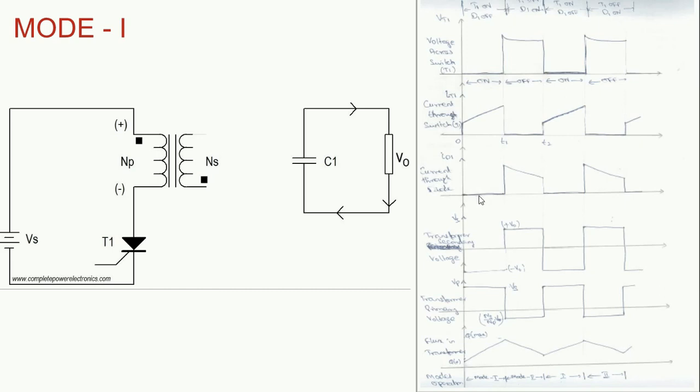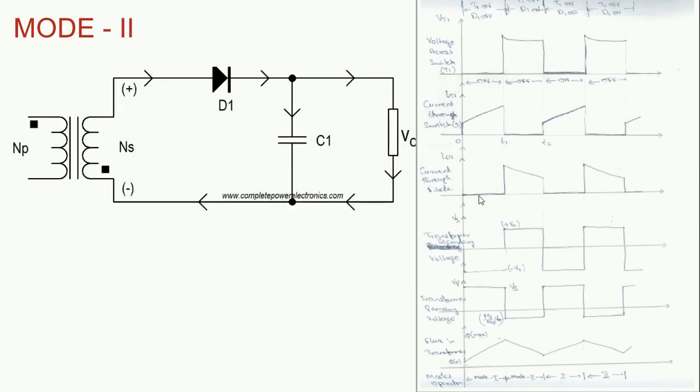Now come to mode two. See mode two, this is the part of circuit which has a closed loop. So in mode two, switch T1 is in off condition, so the entire supply voltage Vs will appear across the switch. That's what you can see here: voltage across the switch during off condition will be complete Vs will appear across the switch.